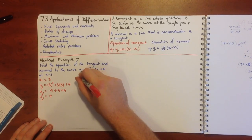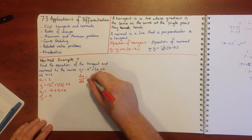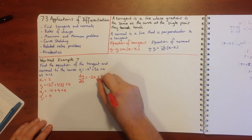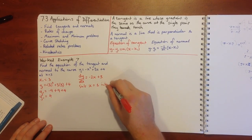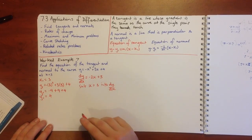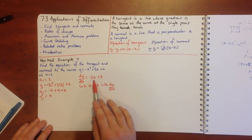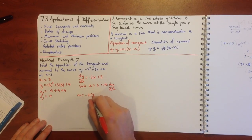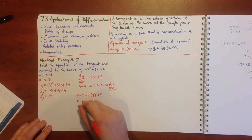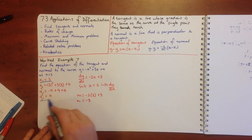To find the gradient we first find dy/dx, which is negative 2x plus 3. Then we substitute x equals 3 into dy/dx because we need the gradient at our point x1, y1. So m equals negative 2 times 3 plus 3, giving us negative 6 plus 3 equals negative 3. Now we have everything: x1, y1, and m.